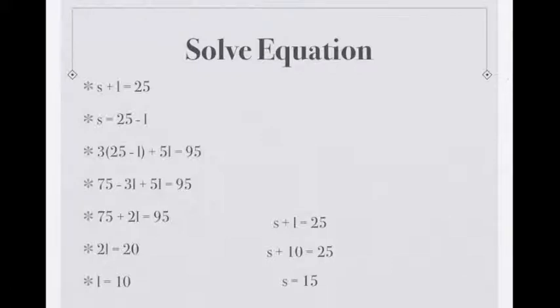Since I have to find L, I put L to one side. Subtract 75 on both sides and divide by 2 on both sides, so L becomes 10. Put L into the first equation, so S plus L equals 25. Put 10 as L, so S equals 15.